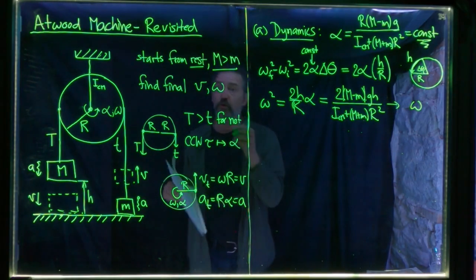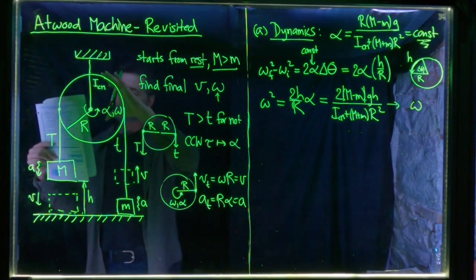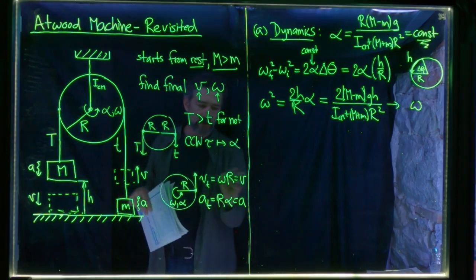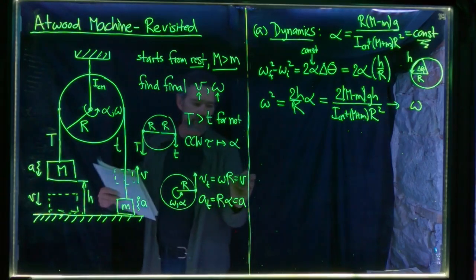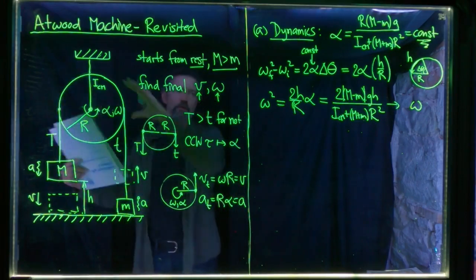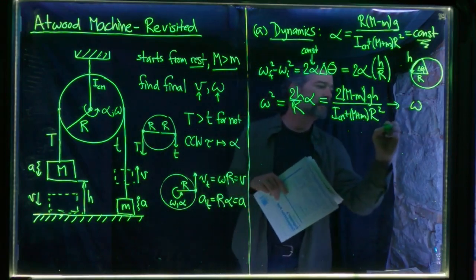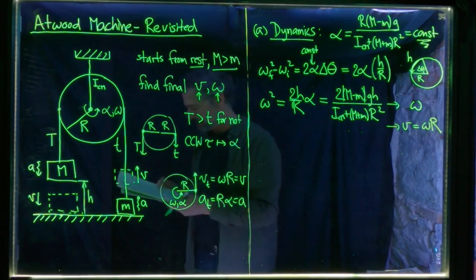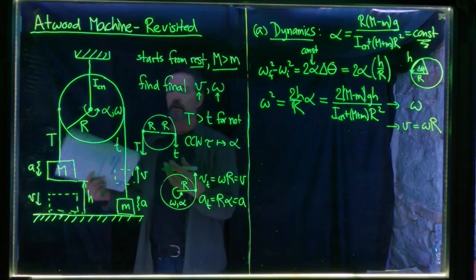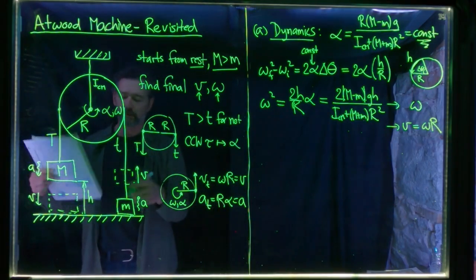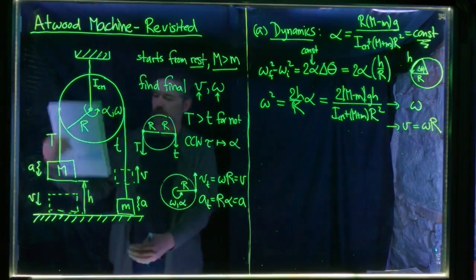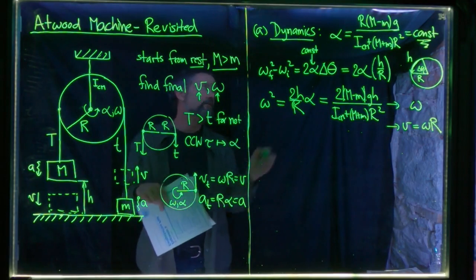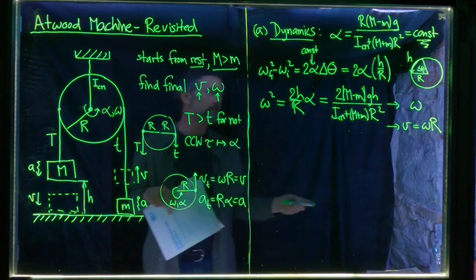Once we know omega, we can determine the final velocity of big M: V equals omega times R. So we've determined the final angular velocity of the pulley and the final linear velocity of the masses just before big M hits the ground. That's one way to solve the problem using dynamics — drawing free body diagrams, applying Newton's second law, solving for alpha, then using kinematics.